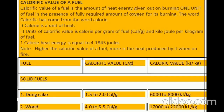Calorific value of a fuel: calorific value of a fuel is the amount of heat energy given out on burning one unit of fuel in the presence of the fully required amount of oxygen for its burning. The word calorific has come from the word calorie. Calorie is a unit of heat. Units of calorific value are calorie per gram of fuel (cal/g) and kilojoule per kilogram of fuel. One calorie of heat energy is equal to 4.1845 joules. Note: higher the calorific value of a fuel, more is the heat produced by it when on fire.